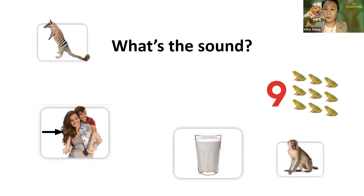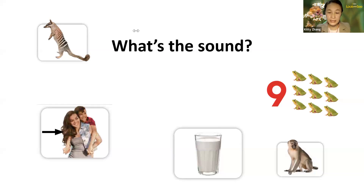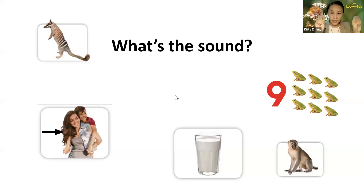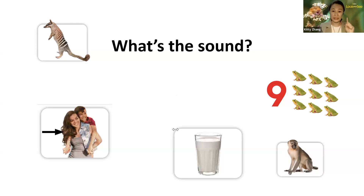Now I'm going to check your ears — whether you can tell the difference between the M sound and the N sound. I'll say some words and you tell me if the beginning sound is M or N. Monkey — M! Milk — M! Number — N! Nine — N! Numbat — N! Great, I think you did great.